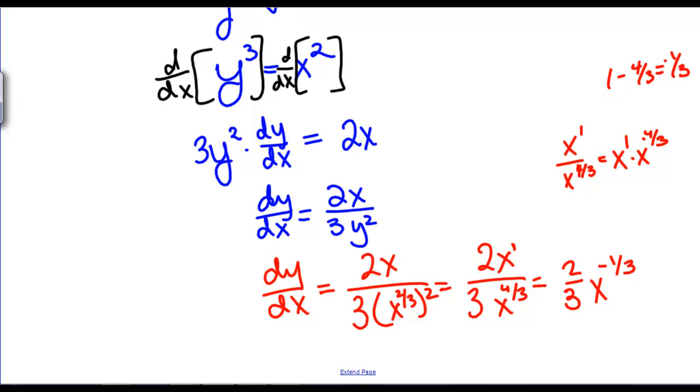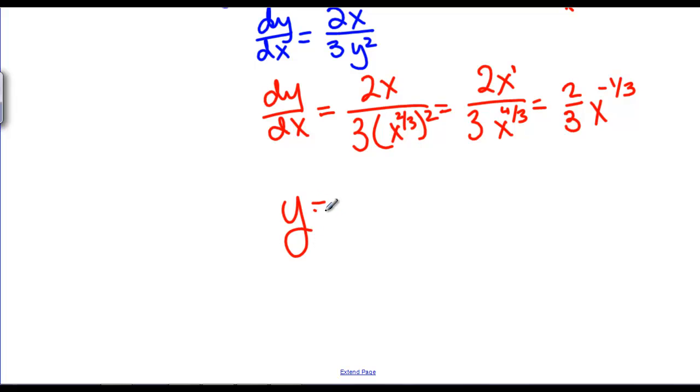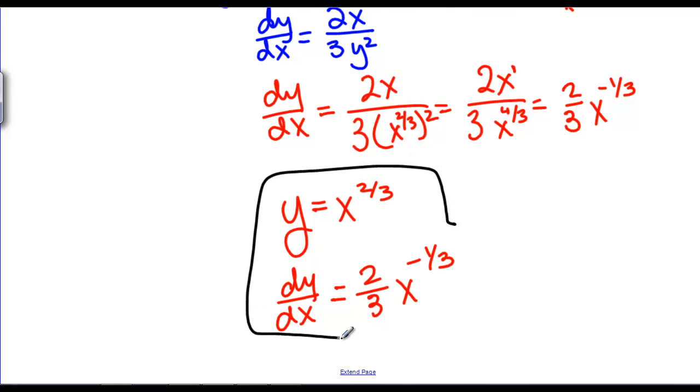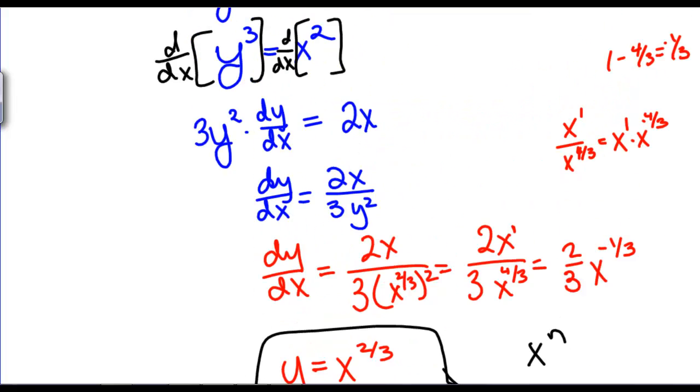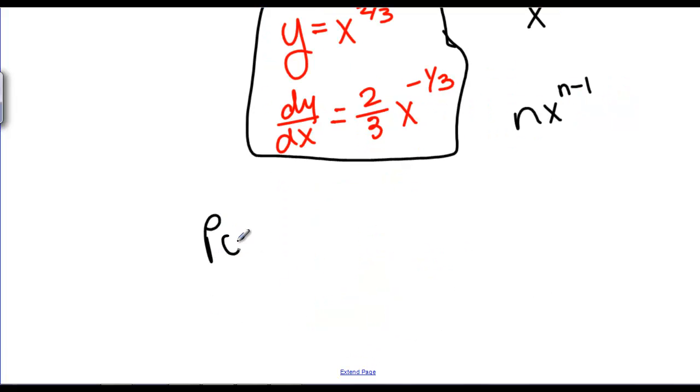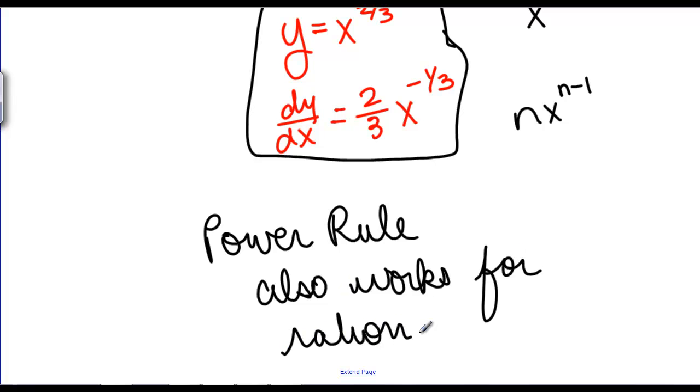So we've got now that if Y equals X to the 2/3, then dY/dX, the derivative equals 2/3 X to the negative 1/3. You might notice this actually does follow the same power rule pattern as before. We have X to the N and then we get NX to the N minus 1, because we have 2/3 minus 1 is negative 1/3. It turns out that using the implicit differentiation in general, we can actually show that the power rule also works for rational exponents. So now we can do more problems with the power rule than ever before.